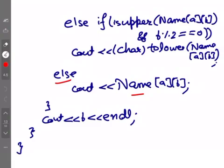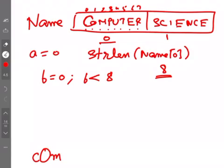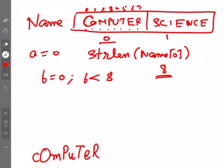Now b becomes 2. It's capital and 2 is divisible by 2, so 'm' is printed lowercase. Then b=3: capital but not divisible by 2, so 'P' prints as-is. b=4: capital and divisible by 2, so 'u' prints lowercase. b=5: 'T' is capital but 5 is not divisible by 2, so 'T' prints as-is. b=6: 'E' is capital and 6 is divisible by 2, so 'e' prints lowercase. b=7: 'R' prints as-is.